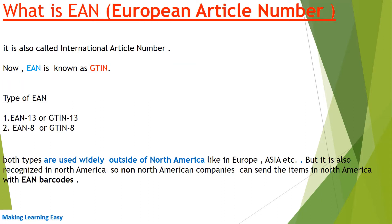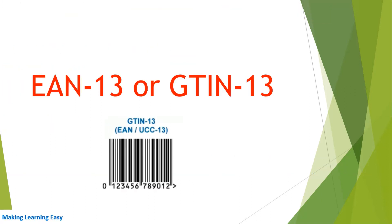Both types are used widely outside of North America, like in Europe, Asia, and Africa. However, they are also recognized in North America, so non-North American companies can send or sell items in North America with EAN codes or EAN barcodes.